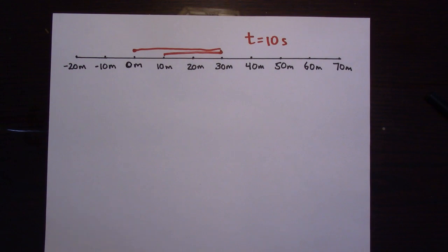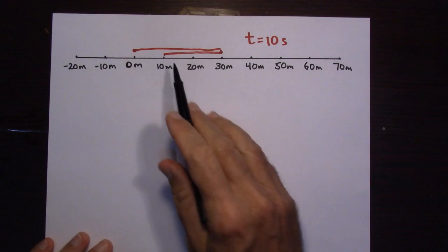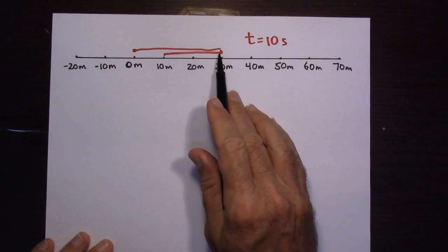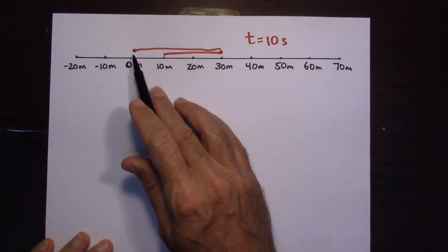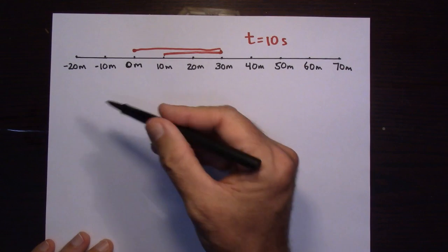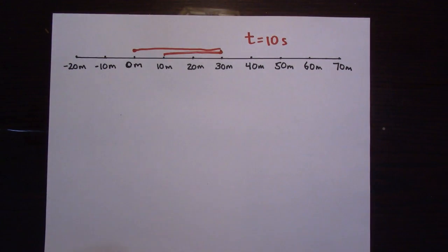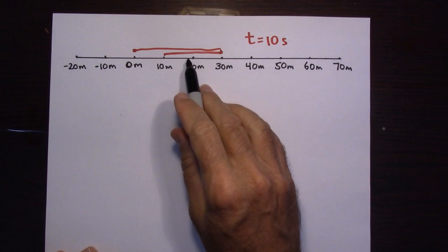What about distance? How far did it go? That's what distance is — how far it went. It went 10, 20, 30, 40, 50 meters. So the distance that this object went is 50 meters.